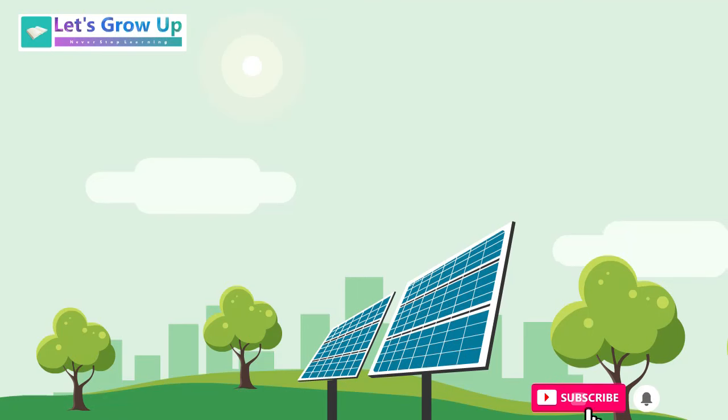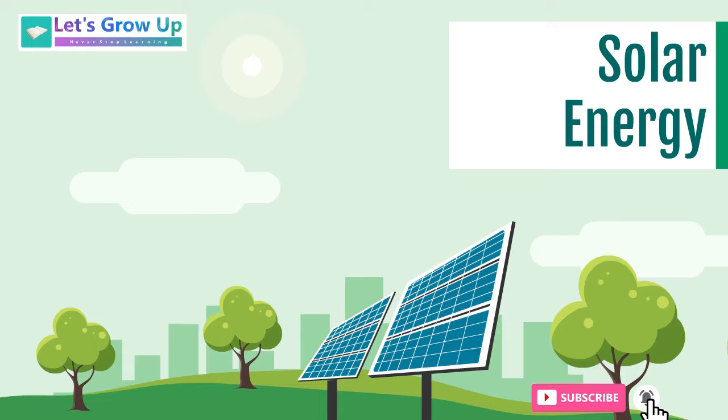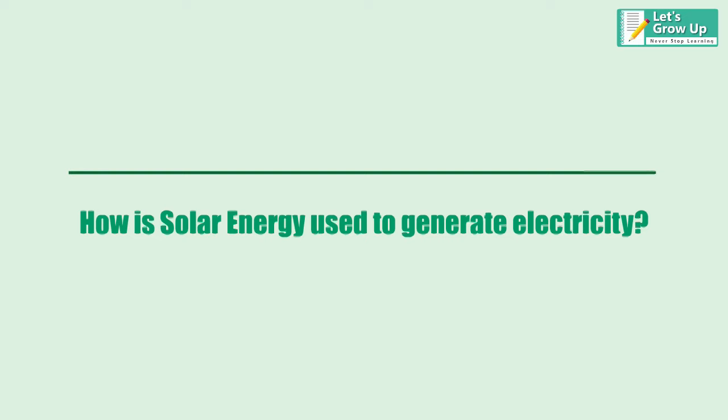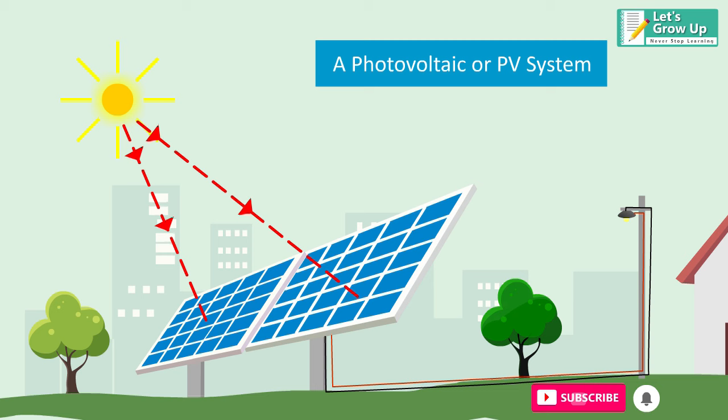The most commonly used renewable energy source is solar energy, but how is solar energy used to generate electricity? A photovoltaic or PV system is used to convert solar or light energy into electrical energy. The basic component of the PV system is known as the solar cell.